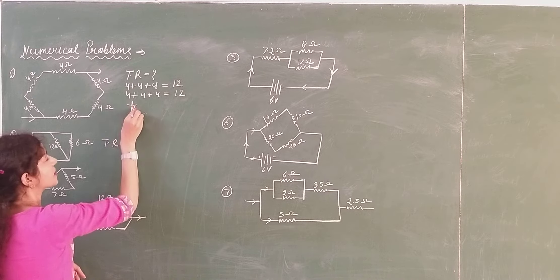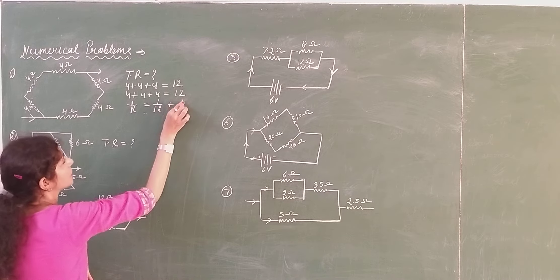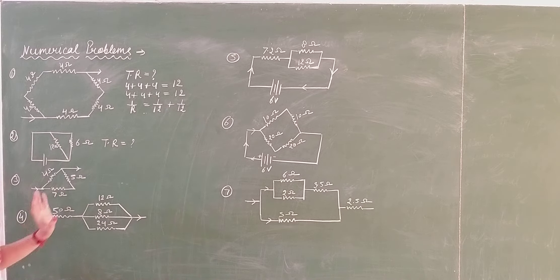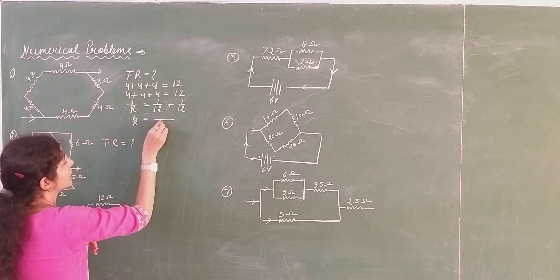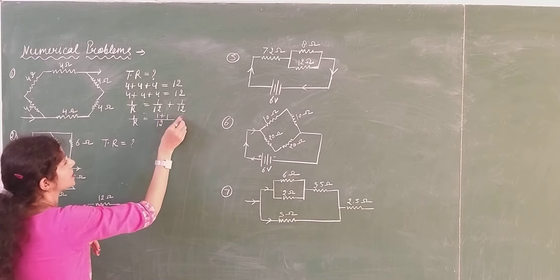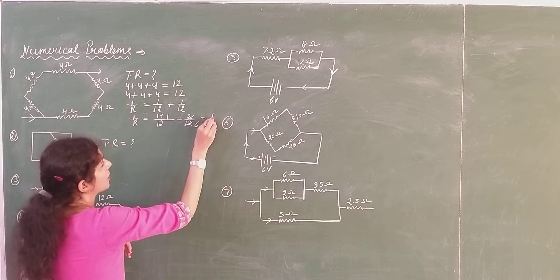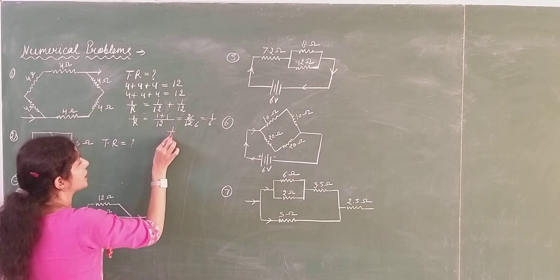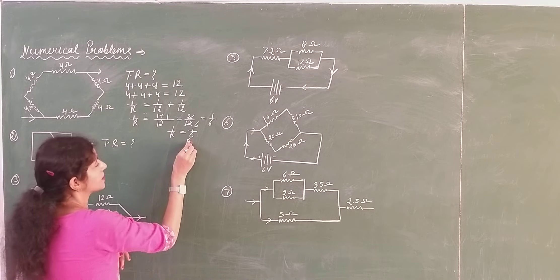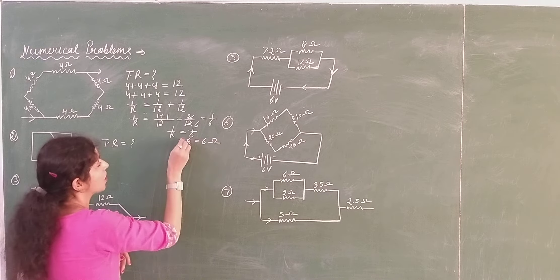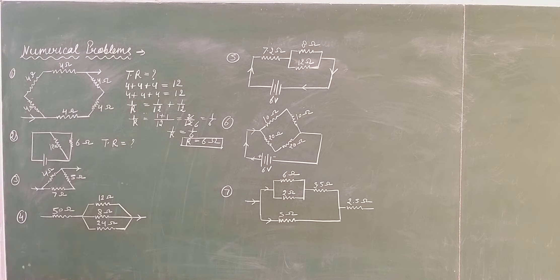So the resultant resistance is found using 1 over R equals 1 over 12 plus 1 over 12. The LCM is 12, so that becomes 2 over 12, which simplifies to 1 over 6. So the value of R equals 6 ohm. This is the total resultant resistance of this combination.